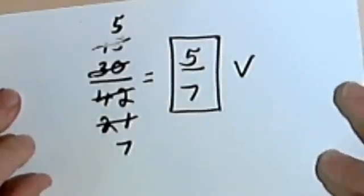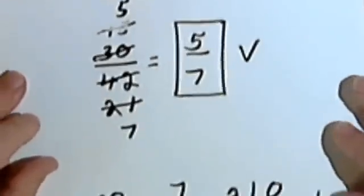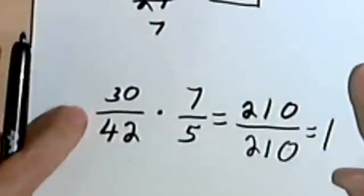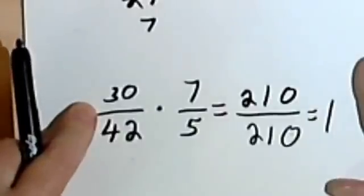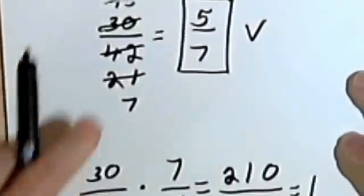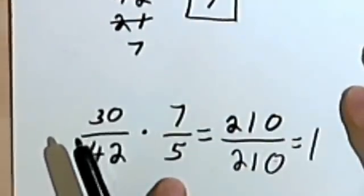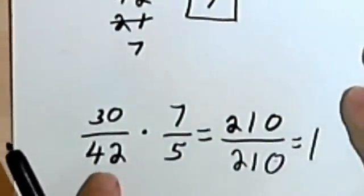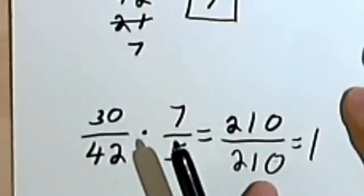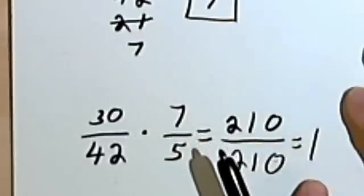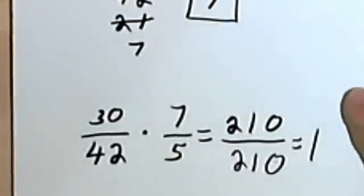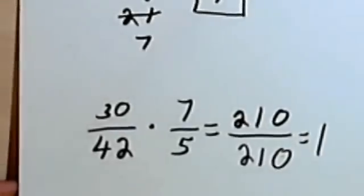Once again, to check the answer, all you do is take the original problem, 30 divided by 42 in this case, then take the answer, 5 over 7, write its reciprocal, multiply the two fractions, and you should end up with 1 as your answer. If you do, then your whole problem, your solution is correct.